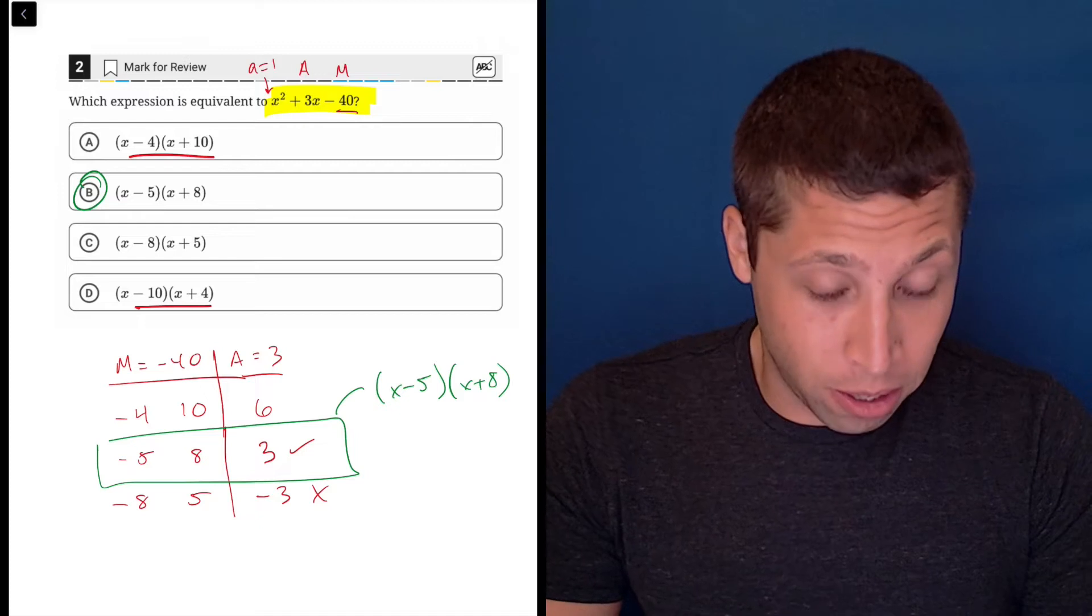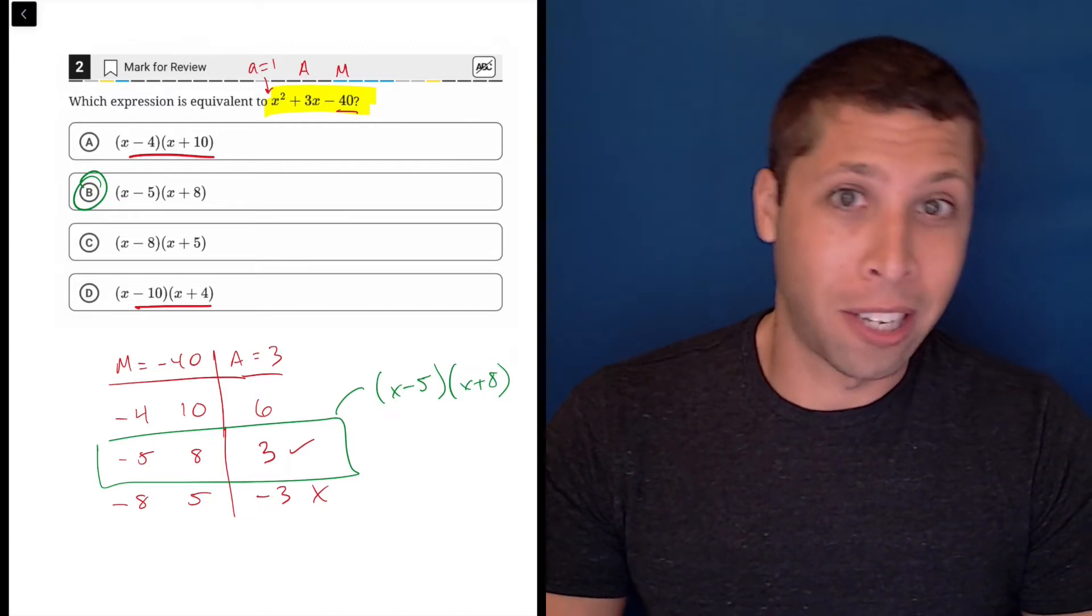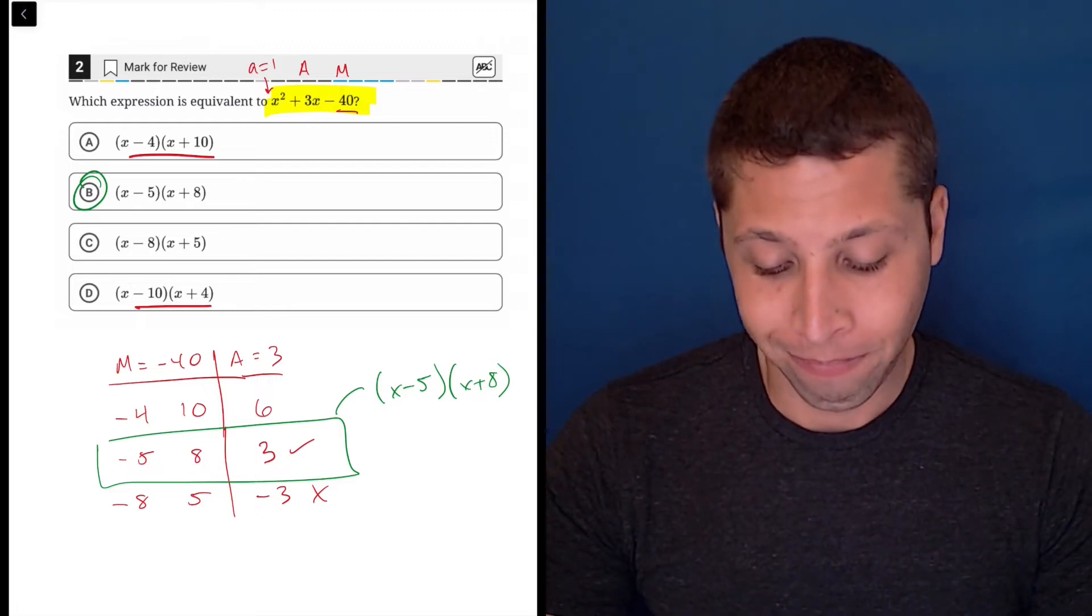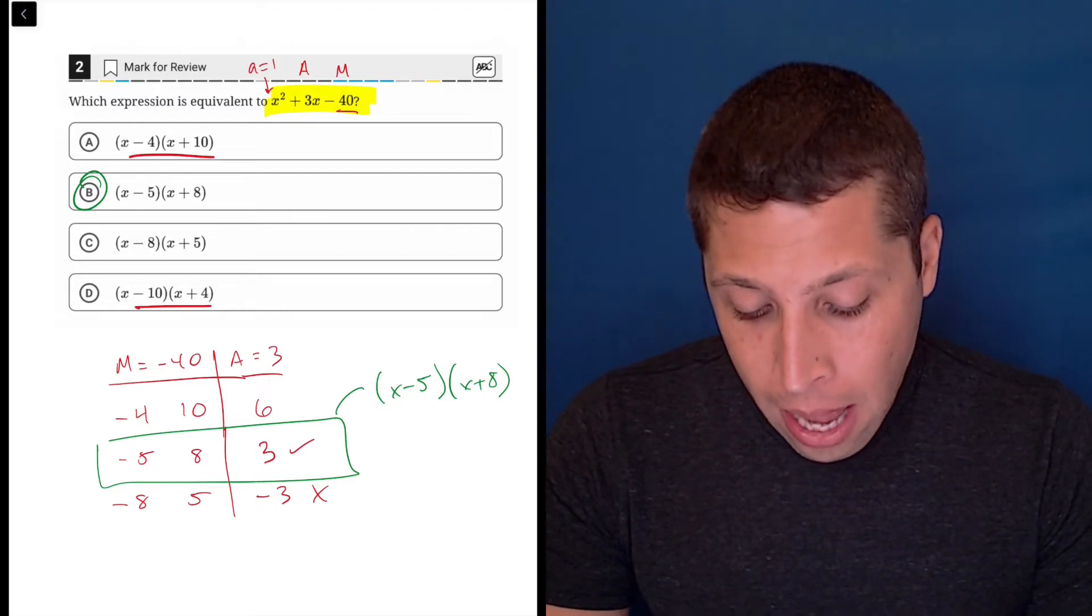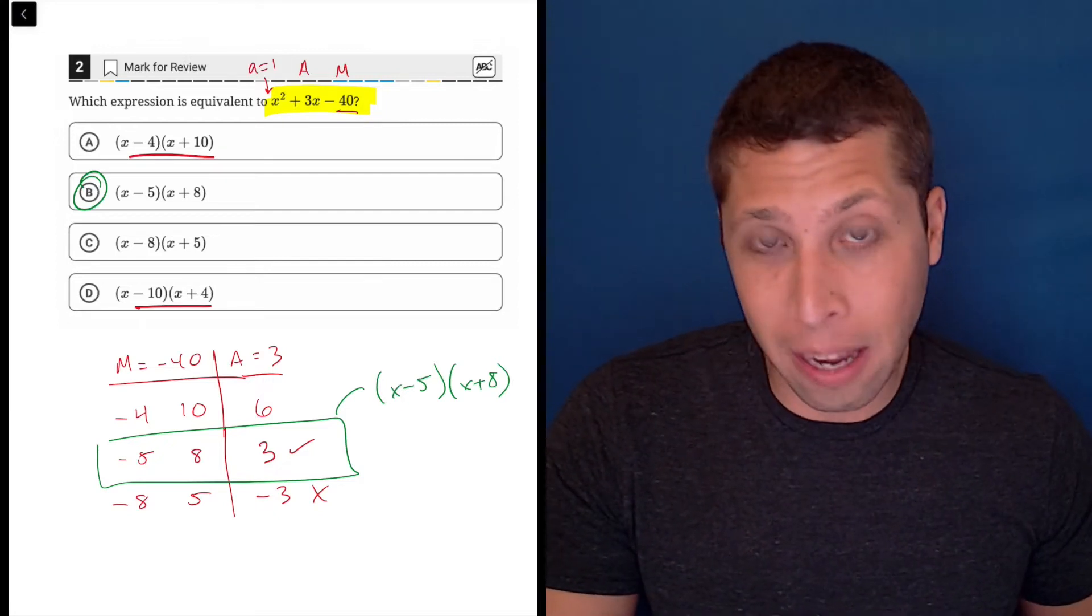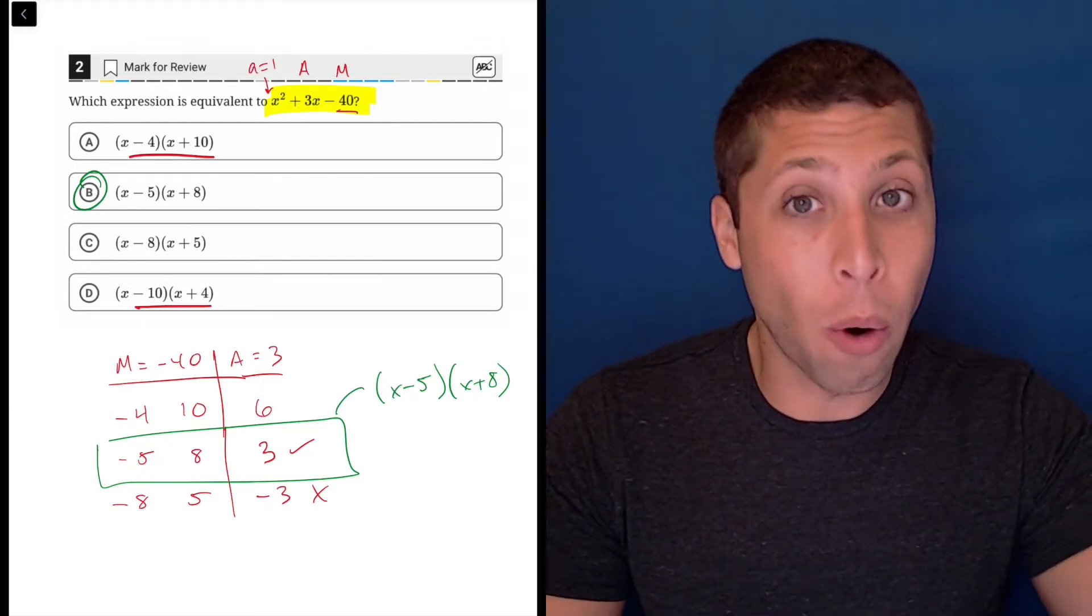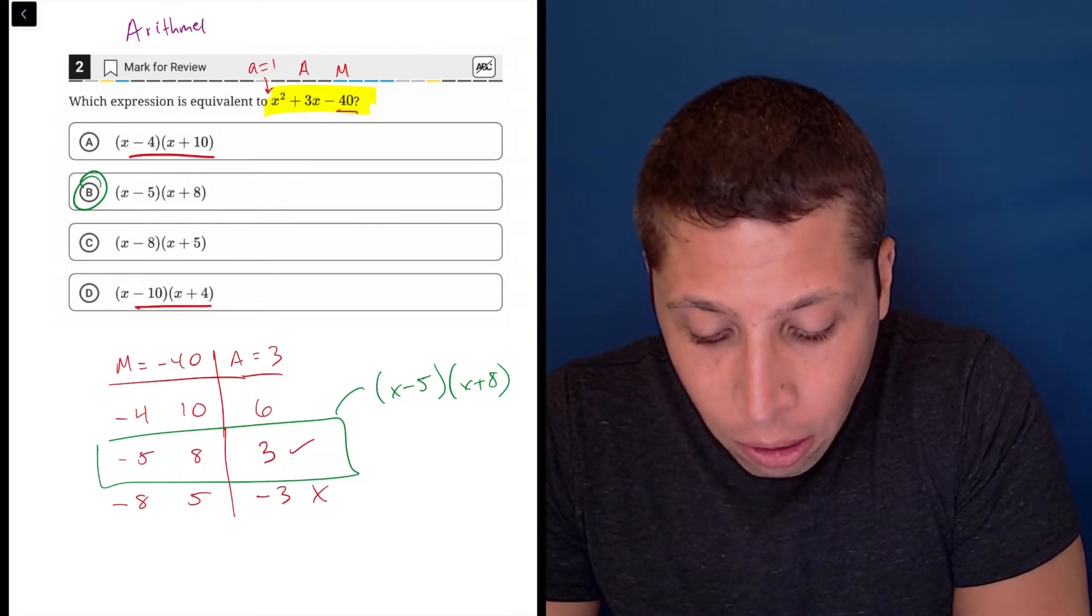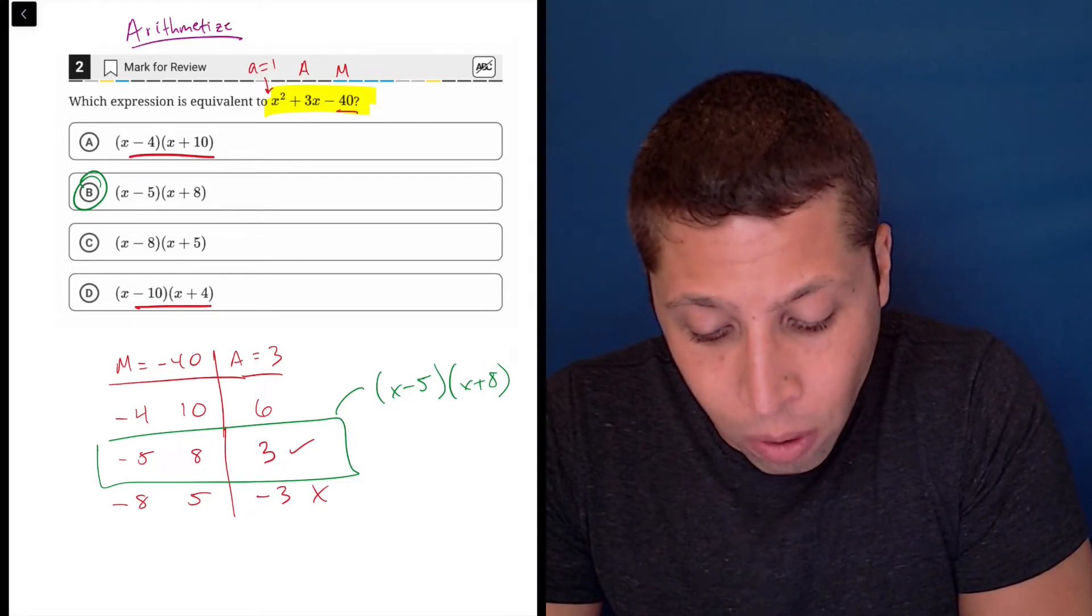That is absolutely the best way to do it, and I even slowed it down just to kind of review factoring for you in case you're confused. But if you're still confused, we have another option. I don't really recommend it here, but maybe this is a good example for those of you who already get this, you might want to watch just to review the Arithmetize strategy.